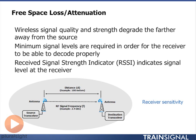A good specification for a wireless product will say: I need to receive this much signal strength to decode at 64 QAM, this much to decode at 16 QAM, this much to decode at QPSK, and this much to decode at BPSK.